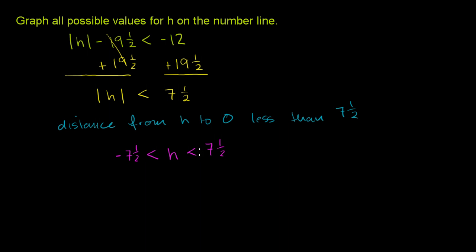If you give me any number in this interval, its absolute value is going to be less than 7 and a half, because all of these numbers are less than 7 and a half away from 0. Let me draw it on the number line, which they want us to do anyway.